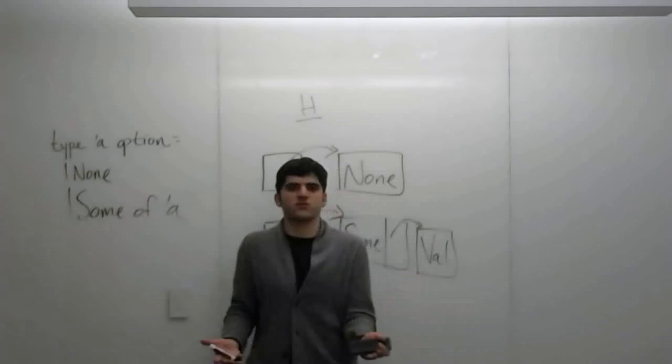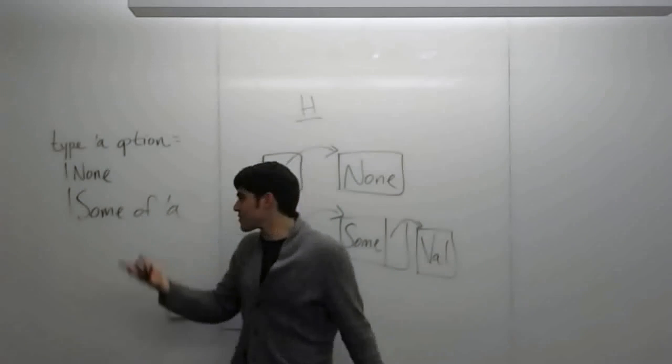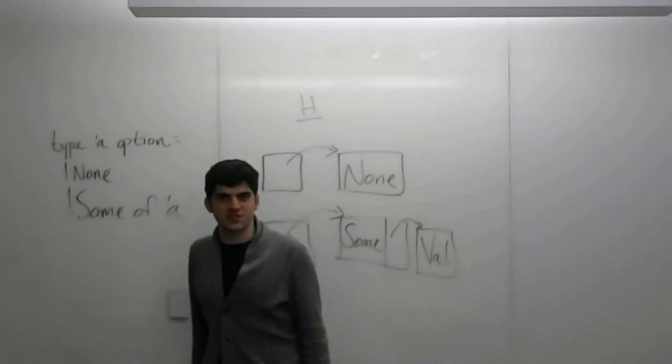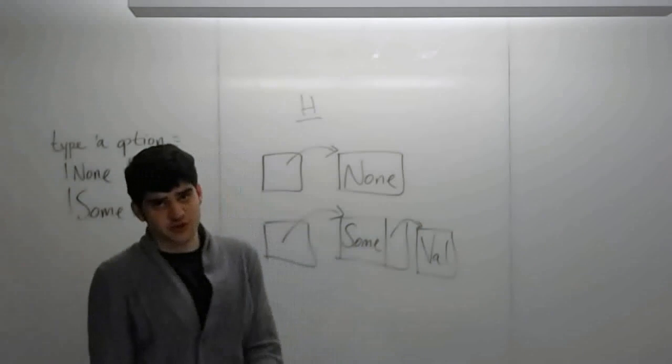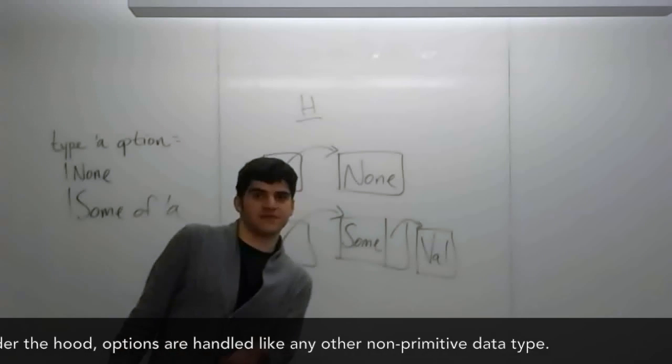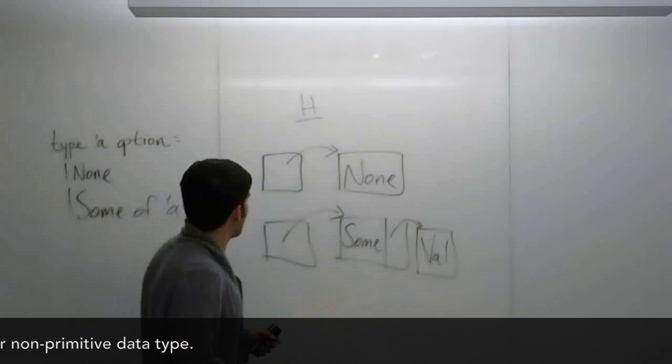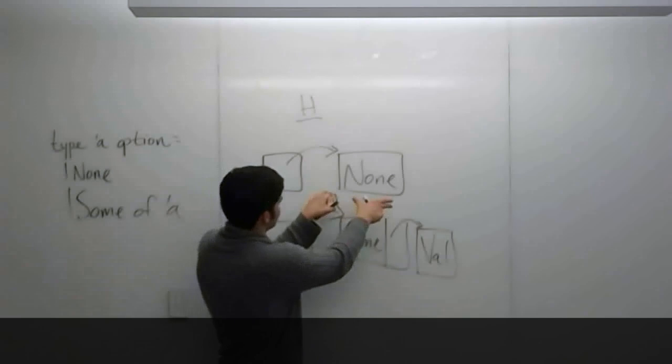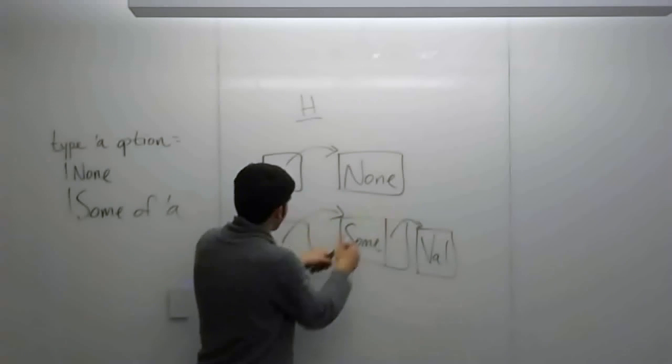We've seen these constructors before when we've worked with non-permitted data types. So how do we represent this on the abstract stack machine? Well, actually, under the hood, it looks the same exact way that it has when we've worked with these other non-permitted data types with constructors. In the heap, you'll have an actual cell, a different cell, for each of the constructors.